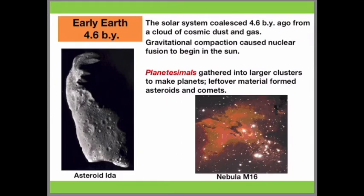Approximately 4.6 billion years ago, the solar system was a cloud of dust and gas known as a solar nebula. Because of gravitational compaction, it caused nuclear fusion, forming the sun in the center of the nebula. As the sun was formed, the remaining material began to come together, resulting in larger particles known as planetesimals, which eventually formed into planets such as Earth, while some became asteroids and comets.